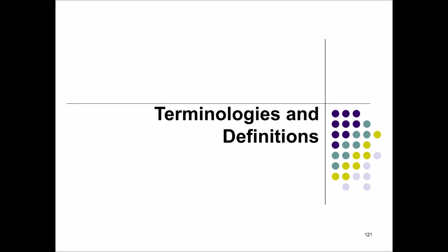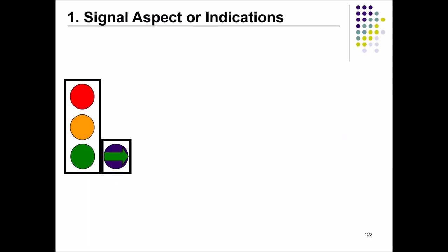Let us move into terminologies and definitions used in traffic signal control systems. You have to familiarize with all these terms so that it is easier for you to design further in the next sub-section, which is the calculation to design the traffic control system. Let's get started about signal aspect or indication — indications means the color of the traffic signal.